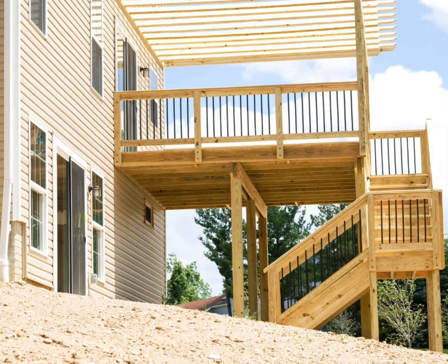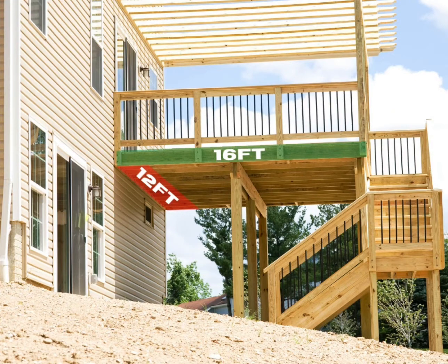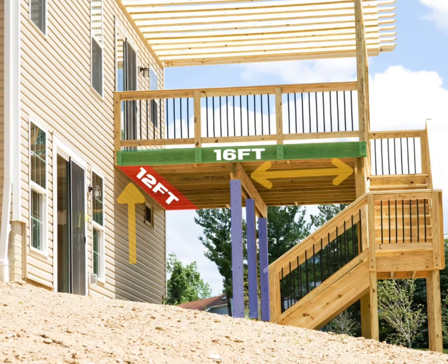Let's use this deck as an example. Let's say it's 16 feet long and 12 feet wide. It's attached to the house on one side and supported by two beams on the other side, each supported by three columns. And let's assume that everything is spaced out evenly.